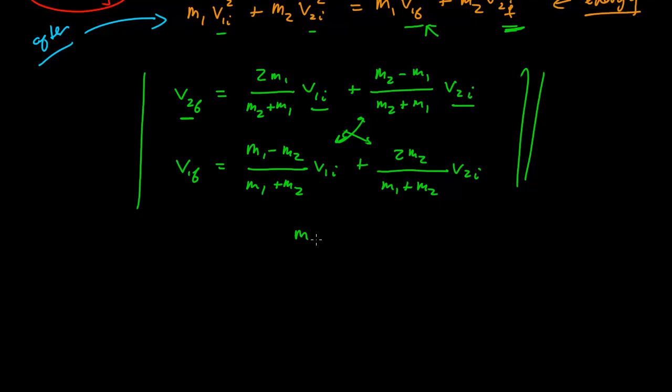Note that one interesting thing is that if m1 is equal to m2, then this term is 0 and this term is 1, and this term is 0 and this term is 1. You just get 2m over 2m, it all cancels. So if m1 equals m2, you get the interesting condition that the velocity of mass 2 final is equal to the velocity of 1 initial, and the velocity of 1 final is equal to the velocity of 2 initial. So under the condition of elastic collisions where the masses are equal, then the masses simply trade velocities.